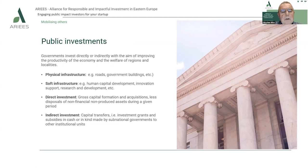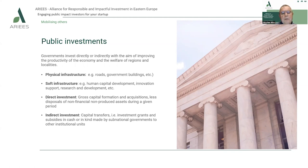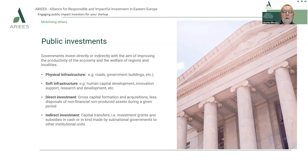Governments, either local or national, invest directly or indirectly with the aim of improving the productivity of the economy and the welfare of regions and localities. There are five core forms in which public investments materialize. First is physical infrastructure — for example, roads, government buildings, material facilities, transportation infrastructure. Second is soft infrastructure, including human capital development such as trainings and financing programs for developing skills of various categories of human capital, as well as innovation support, research and development support, and network support.